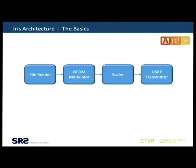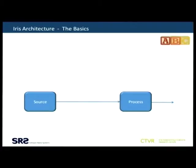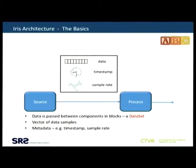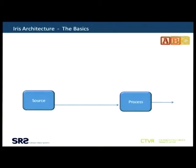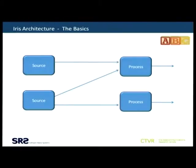That XML file will result in this simple flow graph for an OFDM transmitter. Between the source and the sink, you're passing datasets. The dataset contains data, timestamp, sample rate, and various types of metadata. You can have simple source-to-sink flow graphs, but they support multiple inputs and multiple outputs, so you can build up pretty complex flow graphs.